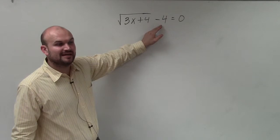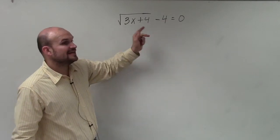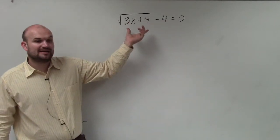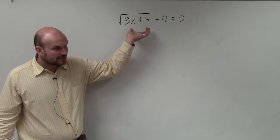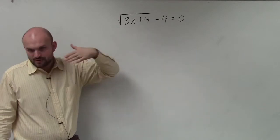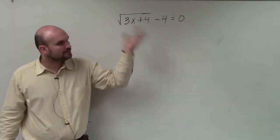The inverse of subtracting 4 would have to be adding 4. The inverse of taking the square root would be raising it to the second power, right? Or squaring it. Square root, square. Taking the cube root, cube, right?